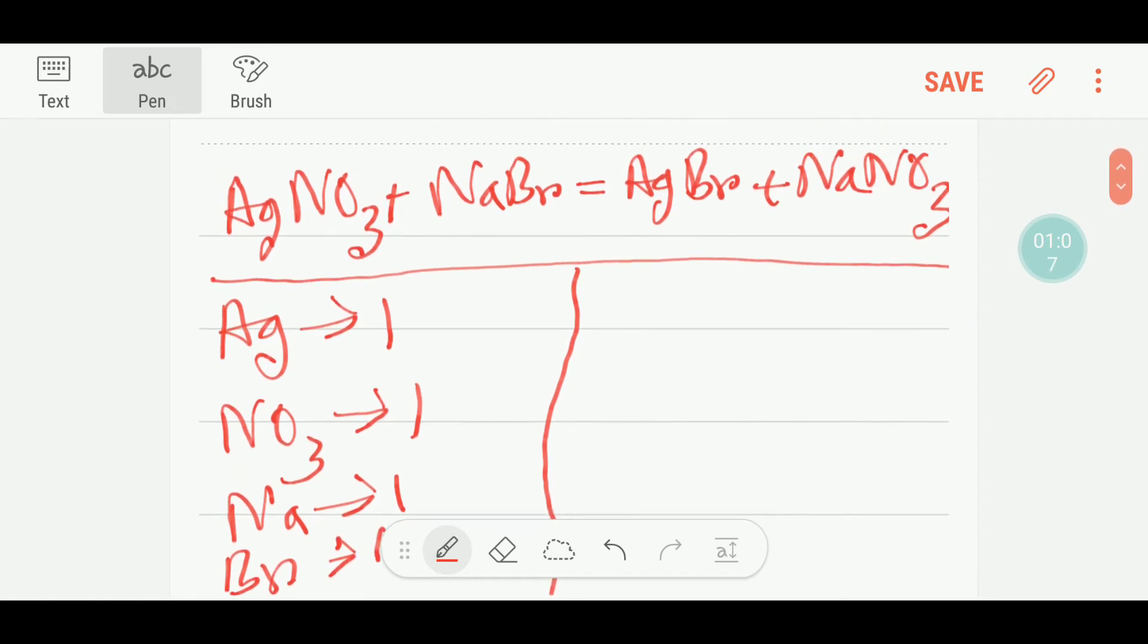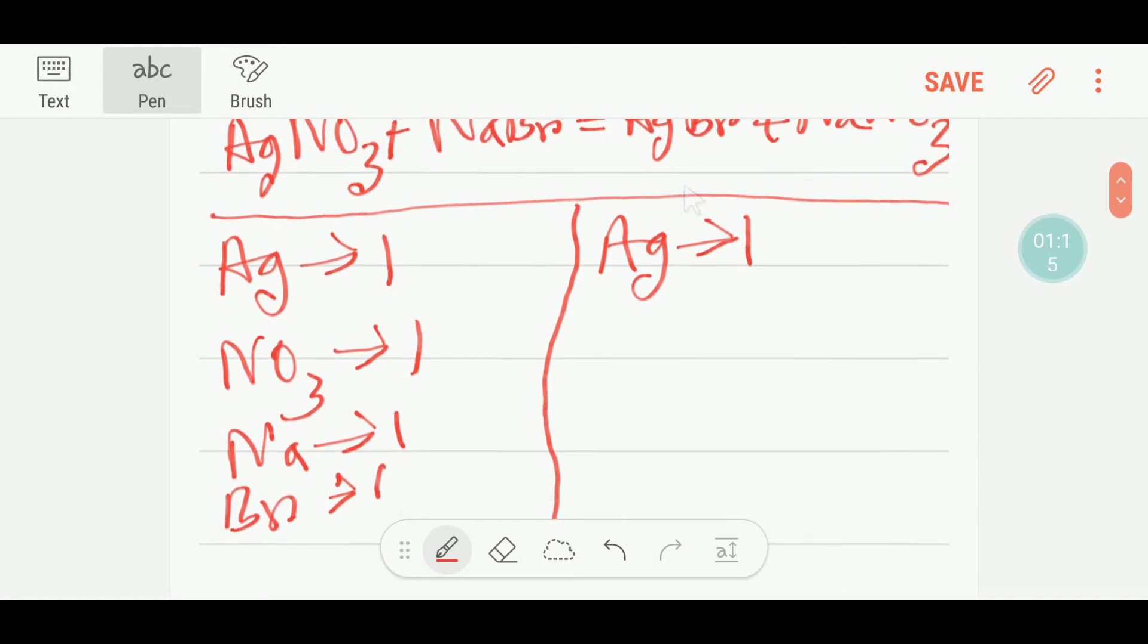On the right-hand side, we have one silver and we have one bromine.